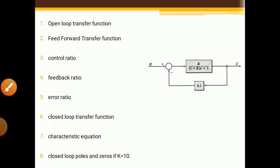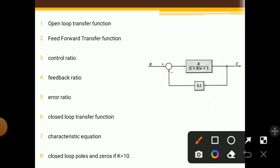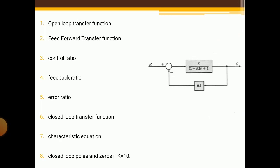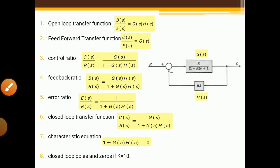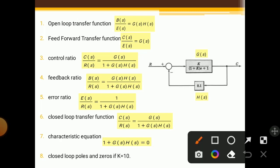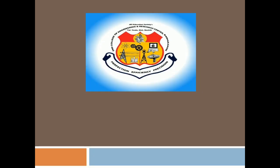One feedback loop system is shown. As per the formula, one term is G and the other term is H. We have to find the open-loop transfer function, which is the multiplication G(s)·H(s). The second question asks for the feed-forward transfer function.